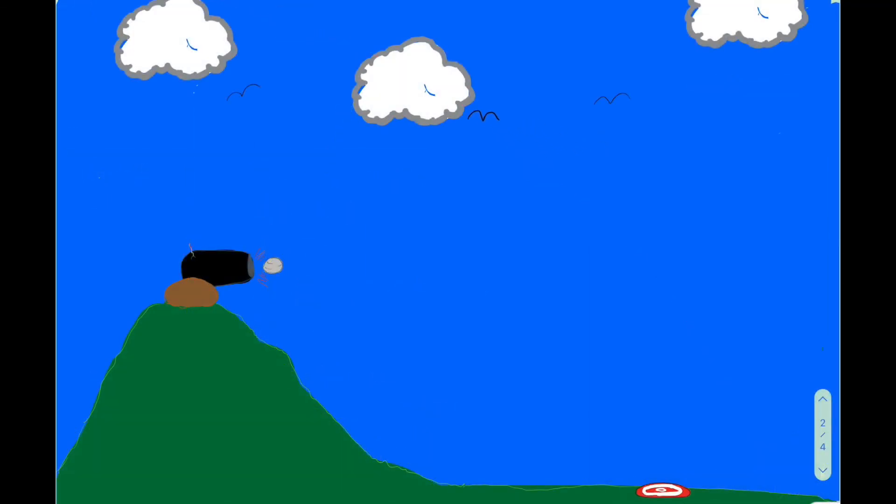So we got this cannon here. It's up on a hill, so it has some height. It's firing horizontally, so it's a horizontal projectile. And it's going to hit that target over there, so we have a range. So take a look and make up some numbers, or I'll make up some numbers, and you're going to try to find the answer. Good luck.